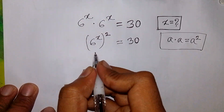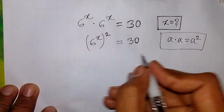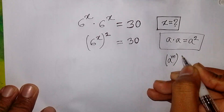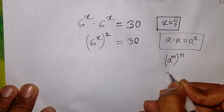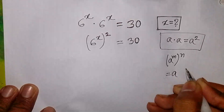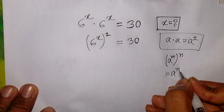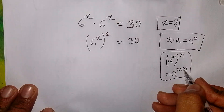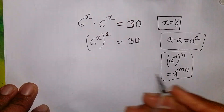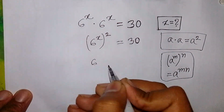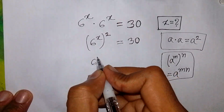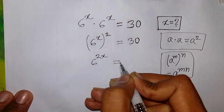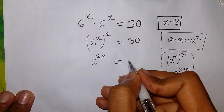Now here we apply the exponential rule that a to the power m, bracket to the power n, is equal to a to the power m times n — that means mn. So it will be 6 to the power of x times 2, that means 2x, is equal to 30.